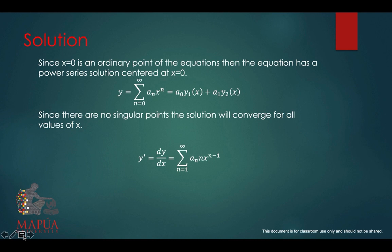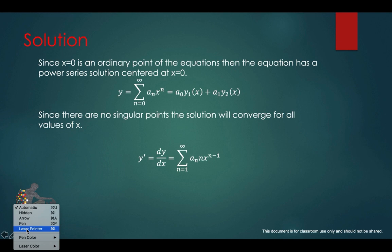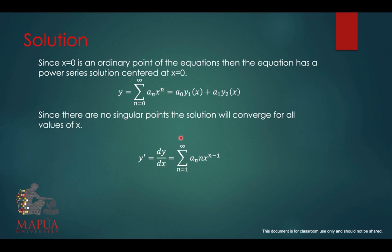If y equals the summation of a_n x to the n, the first derivative dy over dx is found by applying the power rule: bring down n and reduce the power to n minus 1. Note that at n equals 0, the first term is 0, so the initial index for y prime should start at n equals 1.